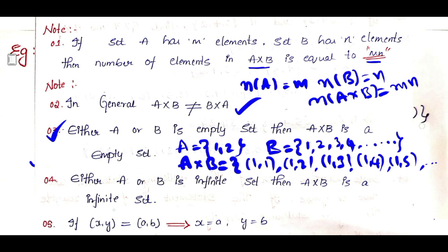Fifth important point: when we say two ordered pairs are equal — that is, ordered pair (x, y) equals ordered pair (a, b) — it means x equals a and y equals b. Their x-coordinates must be equal and their y-coordinates must be equal; only then are the ordered pairs considered equal. That covers the five important points for Cartesian product of sets in this class.